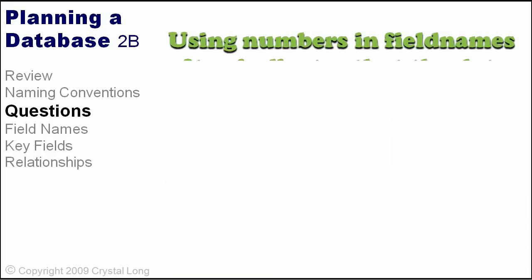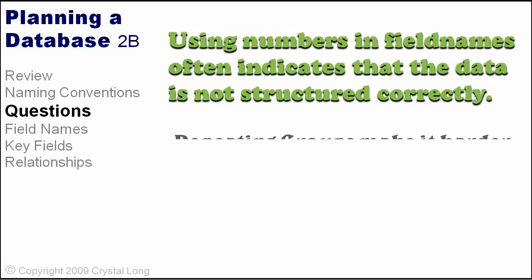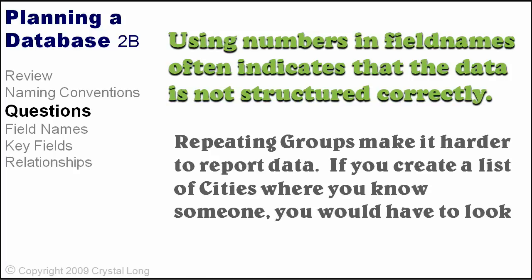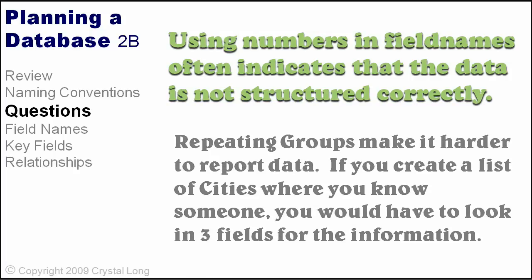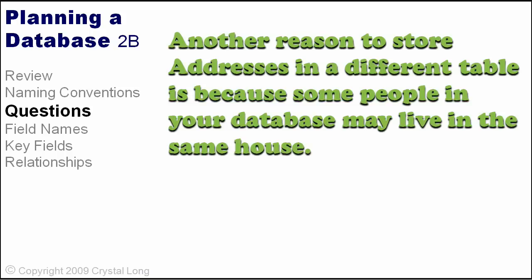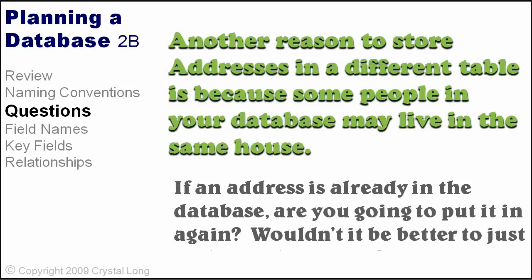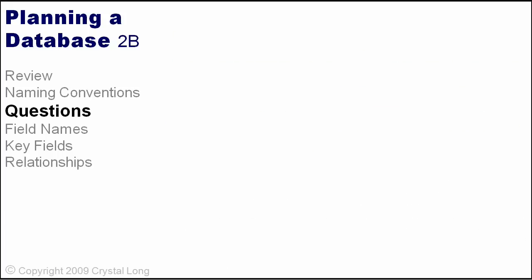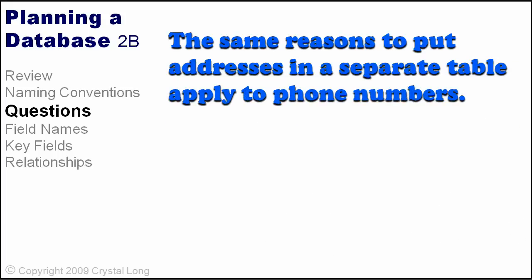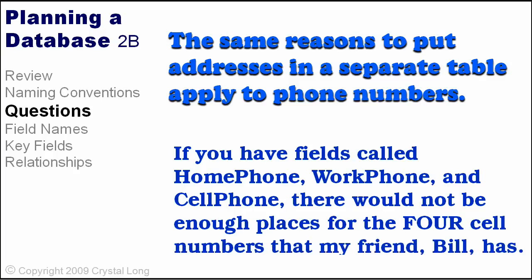Using numbers in field names often indicates that the data is not structured correctly. Repeating groups make it harder to report data. Another reason to store addresses in a different table is because some people in your database may live in the same house — if an address is already in the database, wouldn't it be better to just pick it and move on? The same reasons apply to phone numbers. If you have fields called home phone, work phone, and cell phone, there would not be enough places for the four cell phone numbers that my friend Bill has.